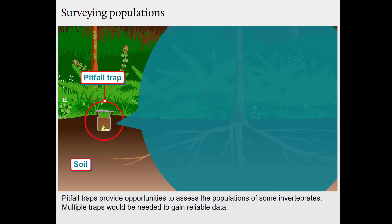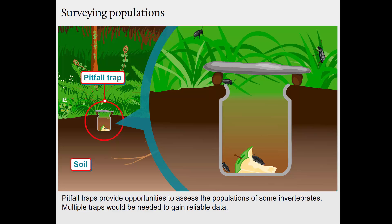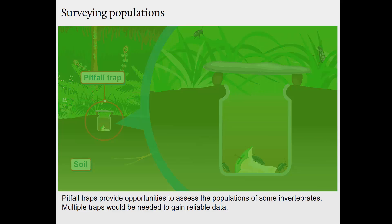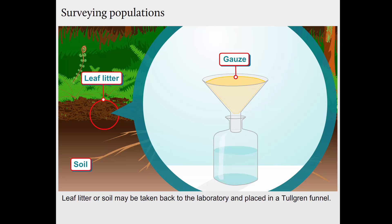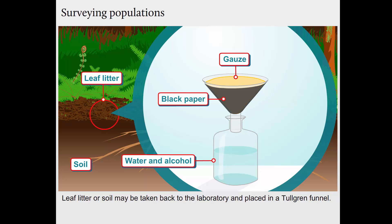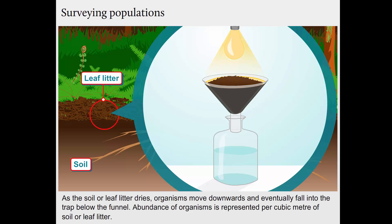Pitfall traps provide opportunities to assess the populations of some invertebrates. Multiple traps would be needed to gain reliable data. Leaf litter or soil may be taken back to the laboratory and placed in a Tullgren funnel. As the soil or leaf litter dries, organisms move downwards and eventually fall into the trap below the funnel. Abundance of organisms is represented per cubic metre of soil or leaf litter.